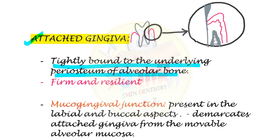It is firm and resilient. This feature is exclusive to healthy adults, because in diseased conditions, the attached gingiva can be soft and edematous, or firm and fibrotic in adults with chronic smoking habits.